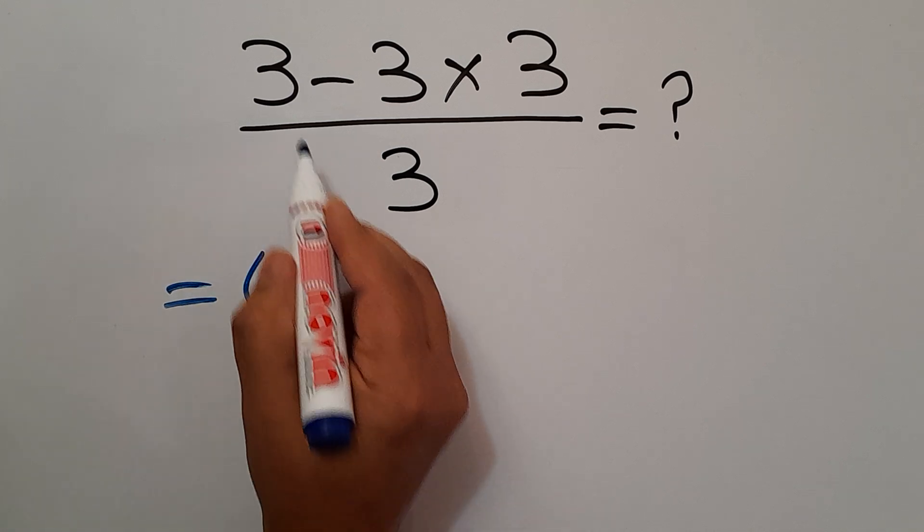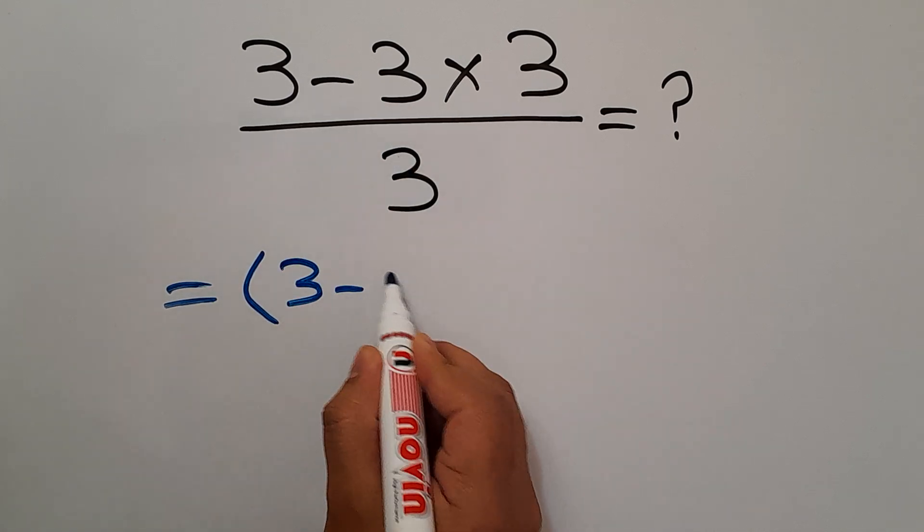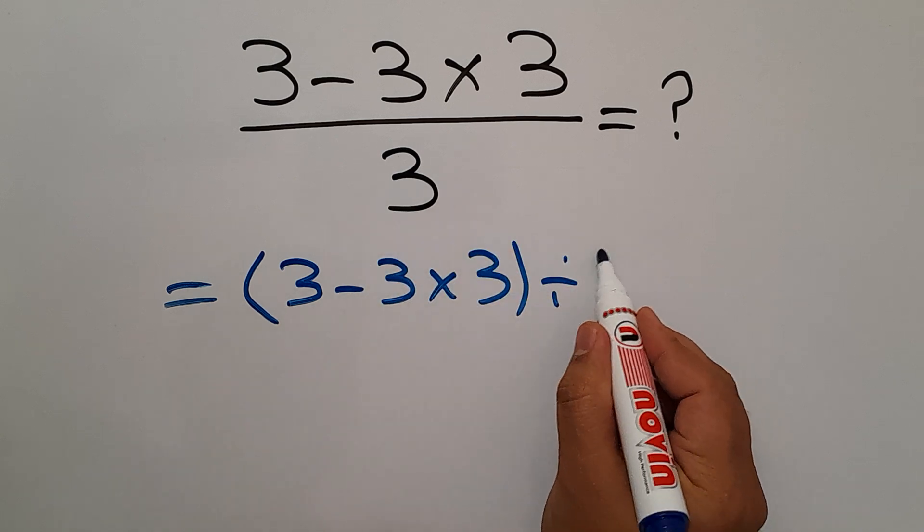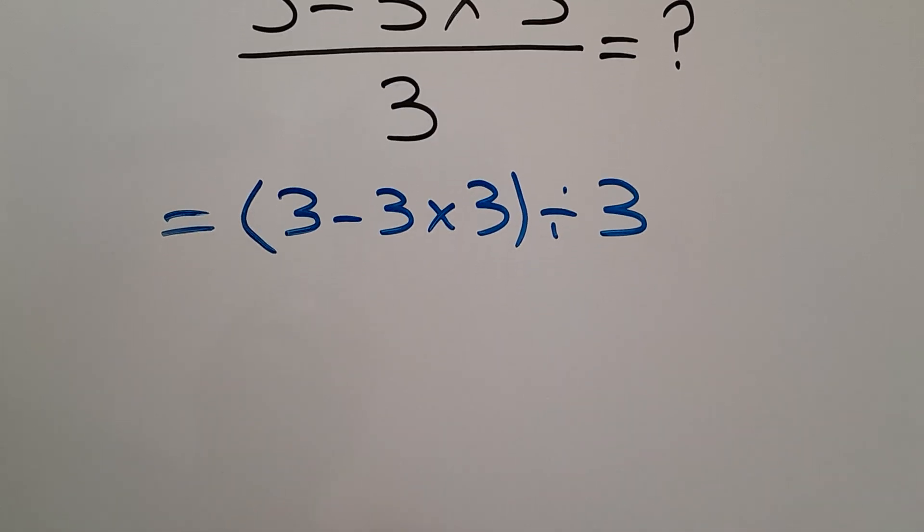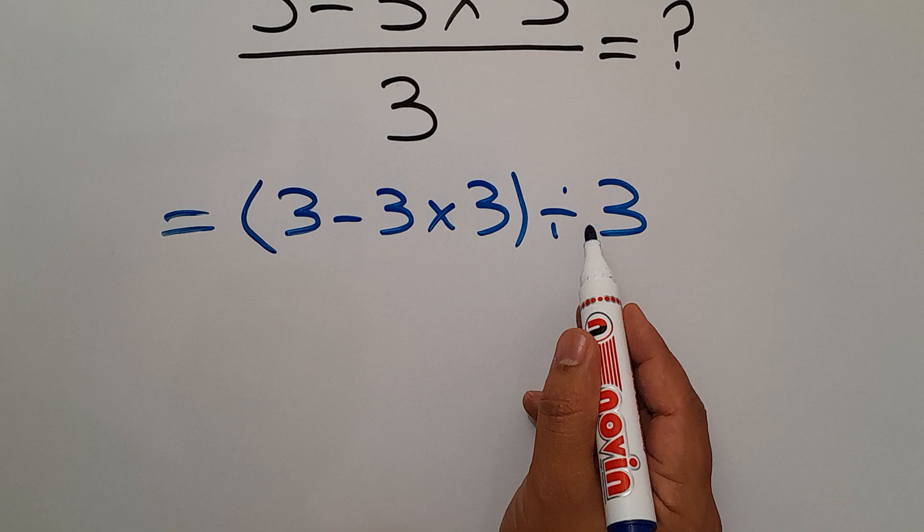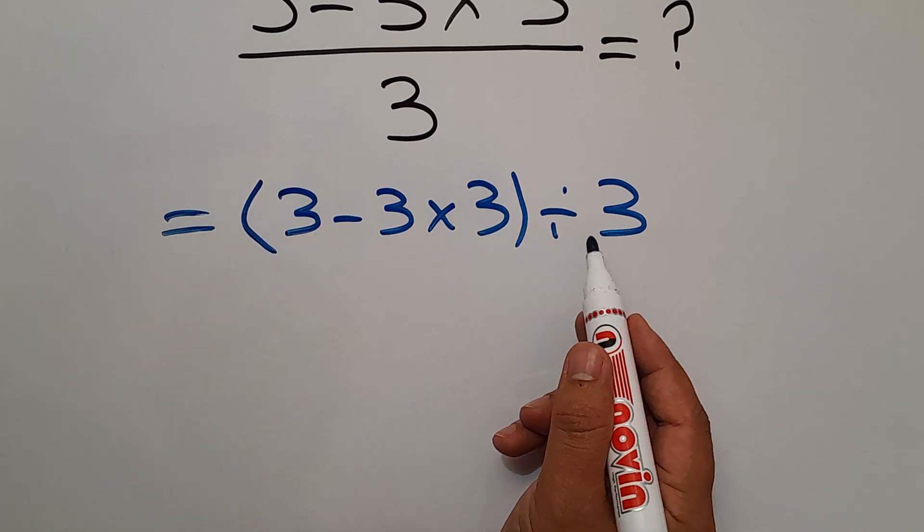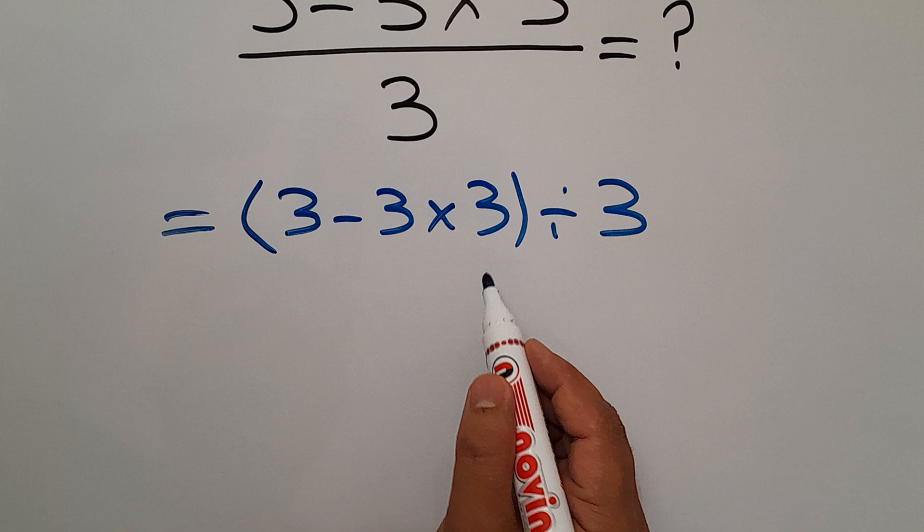Now we have these parentheses and this division. As we know, parentheses has higher priority than other operations, so first we have to handle these parentheses. Inside these parentheses we have one subtraction and one multiplication. According to the order of operations, multiplication has higher priority than subtraction.